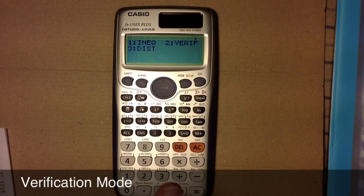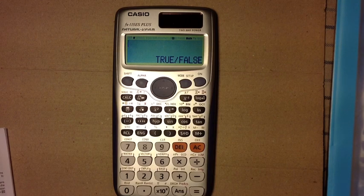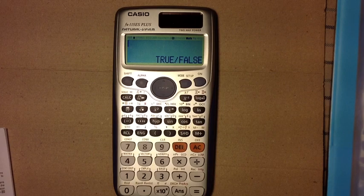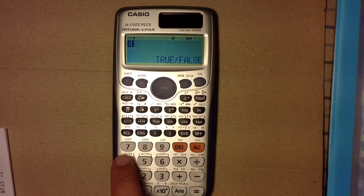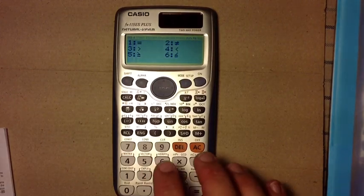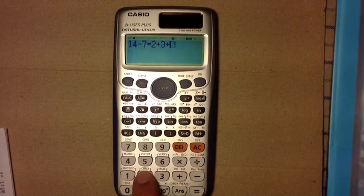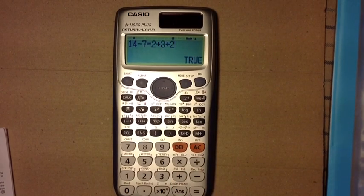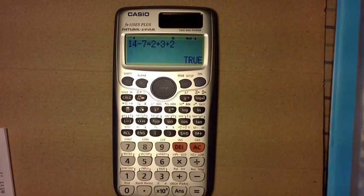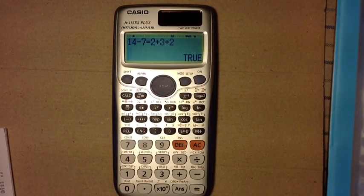Another new mode is the verification mode. And that basically just says, compare two or more statements. We want to know whether it's true or false. So, if I was to compare 14 minus 7, is it equal to 2 plus 3 plus 2? And you hit the equal sign down here, and the calculator tells me, yes, it's true, and of course, this is true.